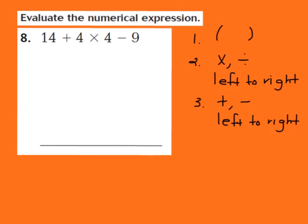Let's take a look at question number 8. Question 8 says to evaluate the numerical expression. They give us 14 plus 4 times 4 minus 9. In order to evaluate this expression correctly, I must follow the order of operations. Step 1: perform anything in parentheses first. Step 2: multiply or divide from left to right. Step 3: add or subtract from left to right.